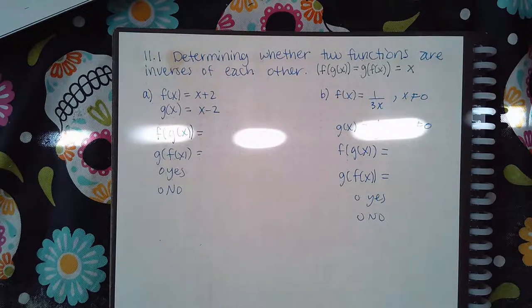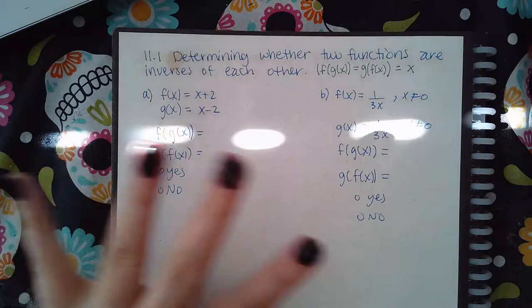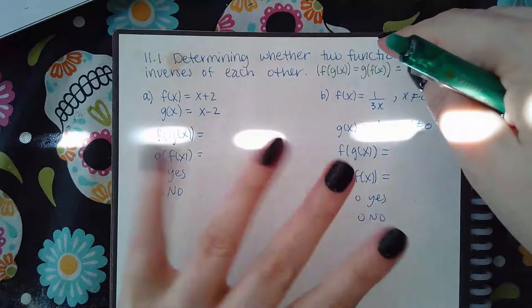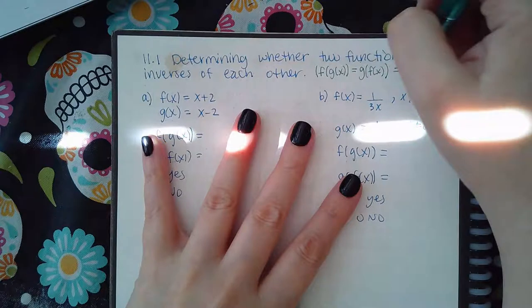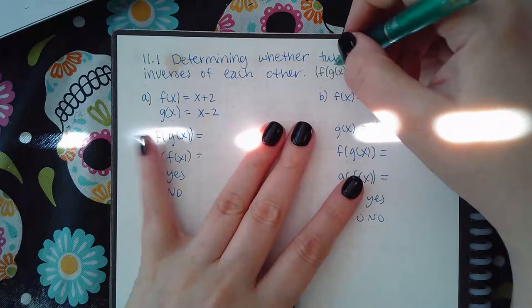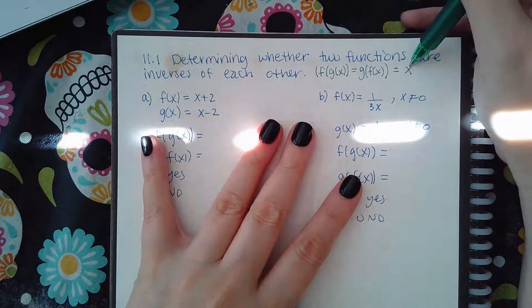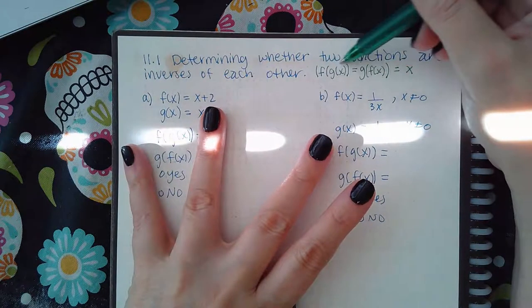But if one of them is not x or if both of them are not x, then the answer is no. So you've got four possibilities: one where f(g(x)) equals x but g(f(x)) does not, second possibility is that f(g(x)) does not but g(f(x)) does equal x.